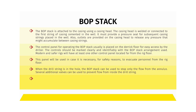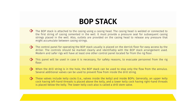When the drill string is in the hole, the BOP stack can be used to stop only the flow from the annulus. Several additional valves can be used to prevent flow from inside the drill string. These valves include kelly cocks — an upper kelly cock having left-hand threads is placed above the kelly, and a lower kelly cock having right-hand threads is placed below the kelly. The lower kelly cock is also called a drill stem valve.